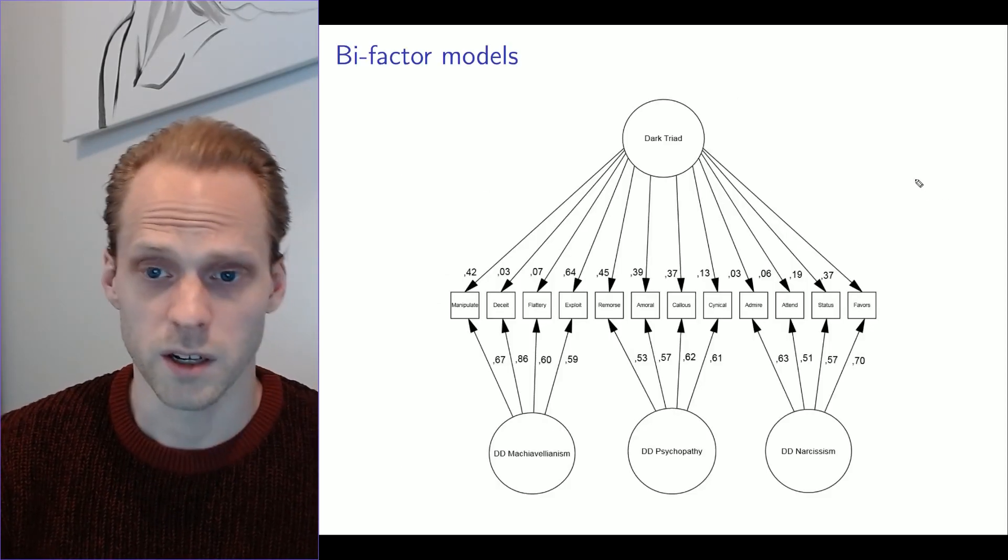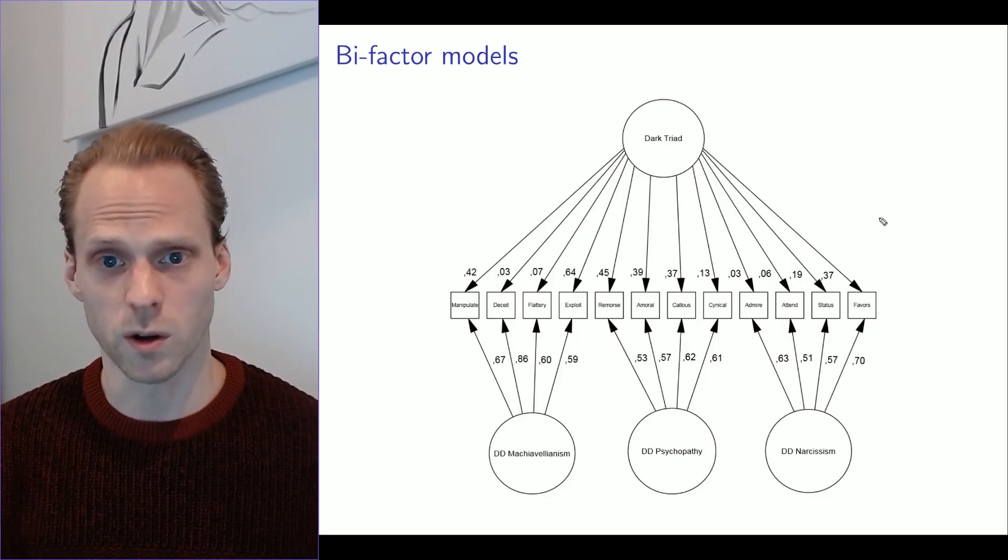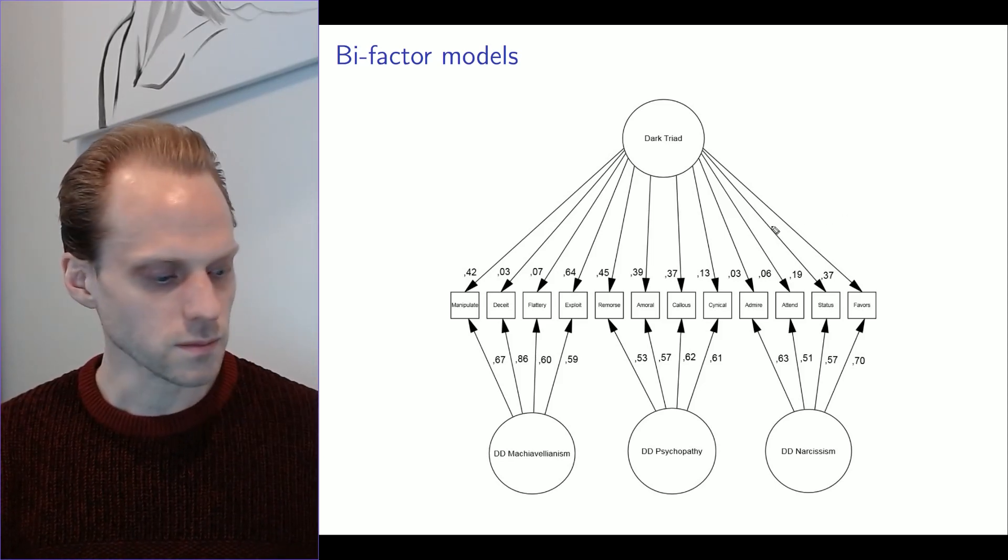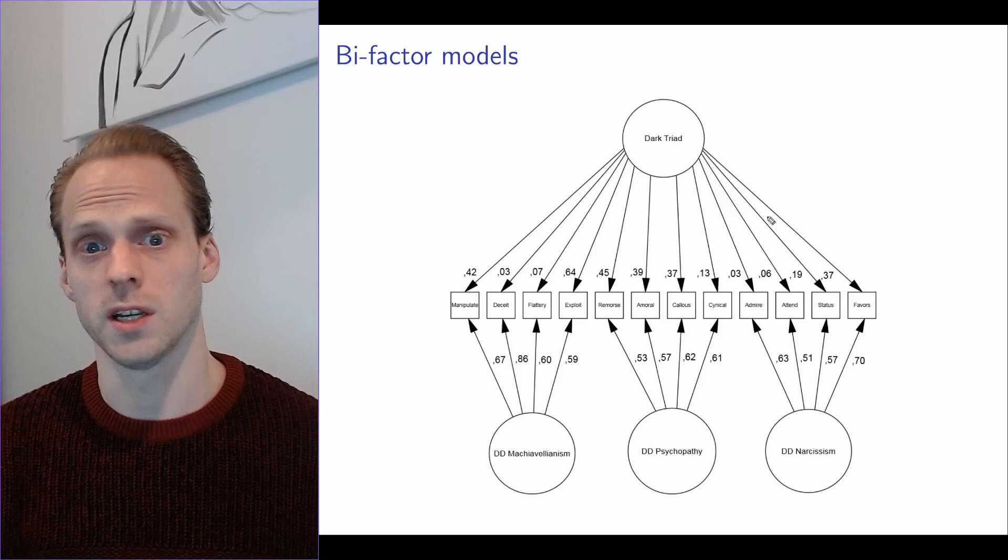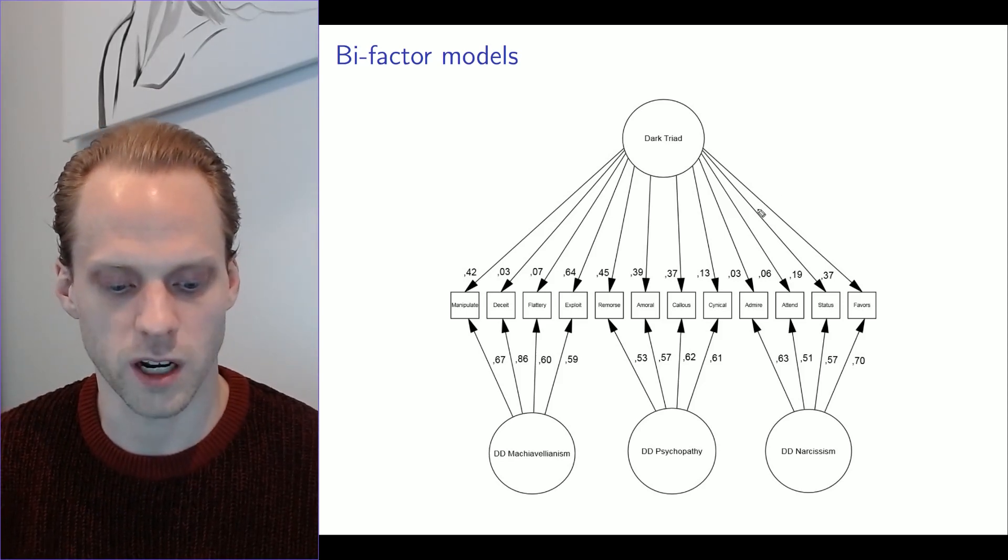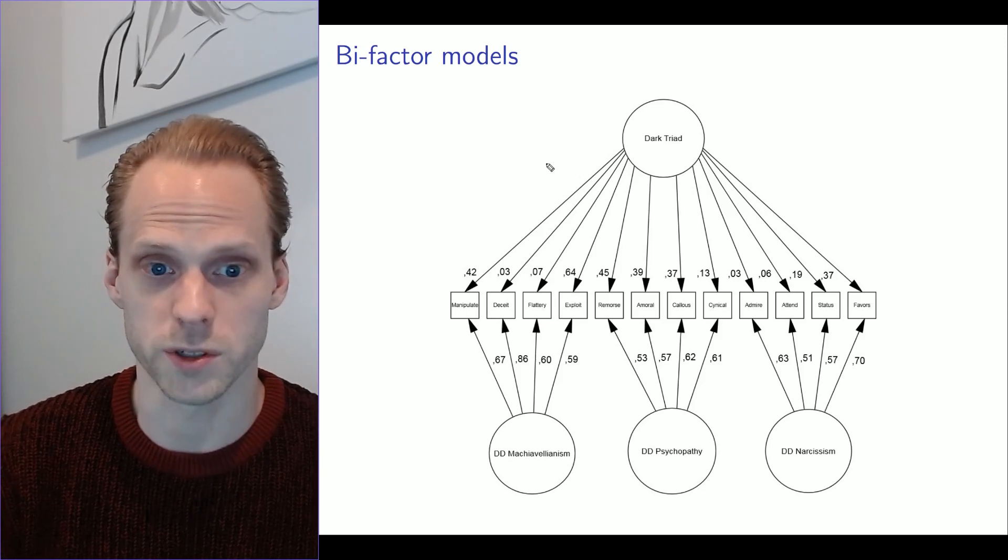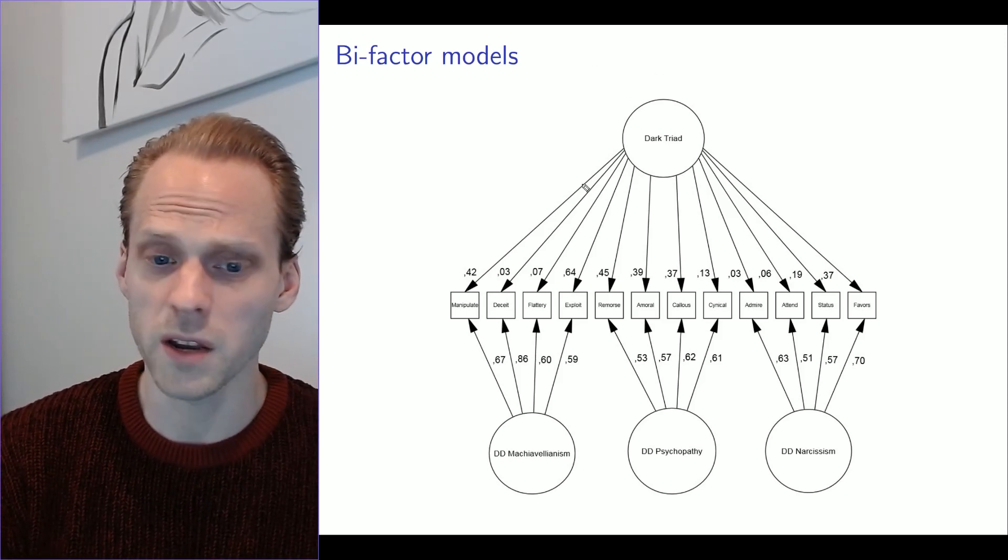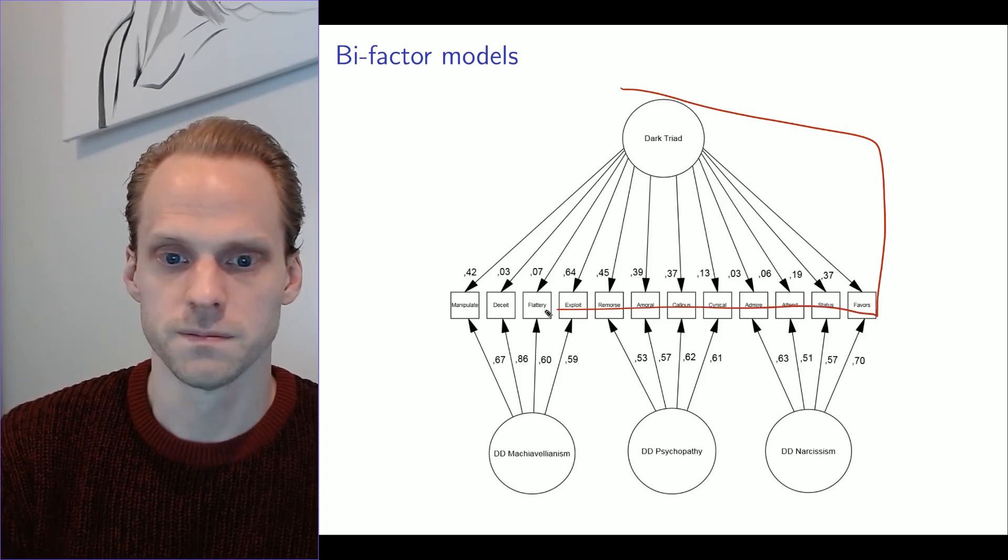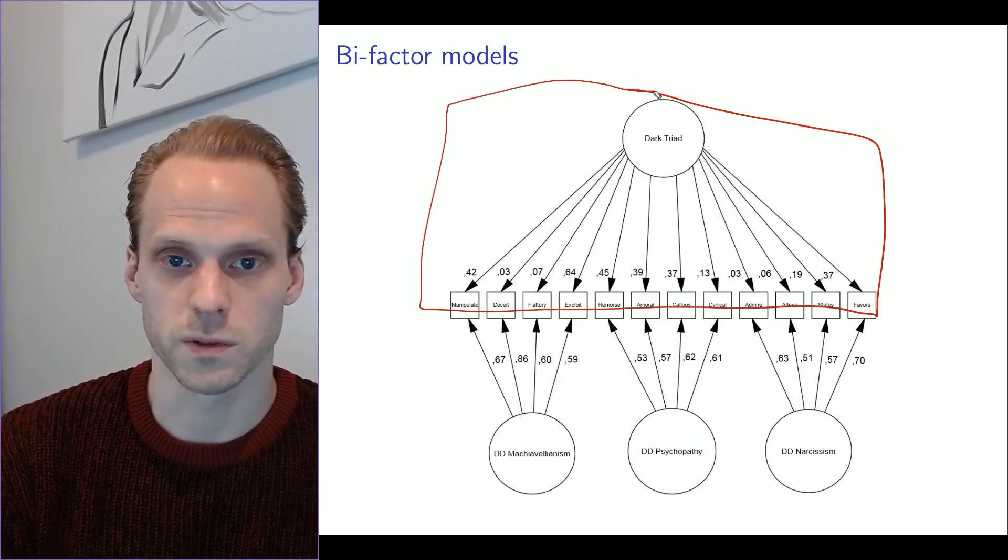Now, another model that we see quite often now is this bifactor model. They're also called hierarchical models, I believe. It's a bit of a tricky way of describing it if you compare it to higher-order models. The bifactor model is different. What we have here is we have a bifactor. That's a general factor as well on all items.